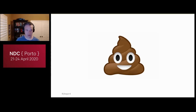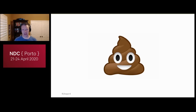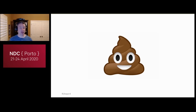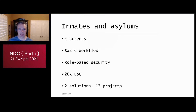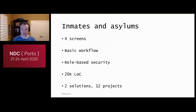One project in particular highlighted the problem that the architecture we'll be talking about today intends to solve. It was a very simple workflow application meant to approve work items, with two different views — a regular user and an admin user. The original developers hadn't built many new systems and did a lot of research about current best practices. This application had exactly four screens with a very basic workflow and simple role-based security, but they somehow generated 20,000 lines of code.